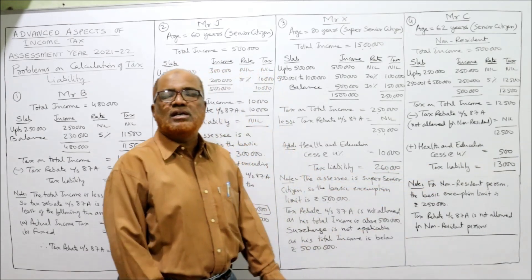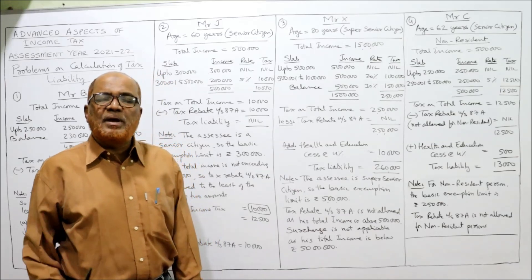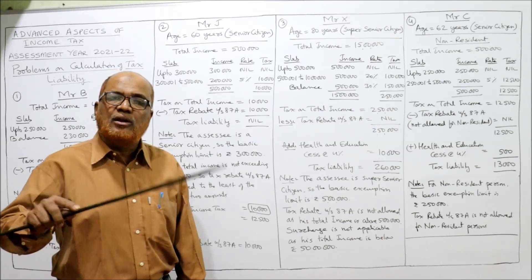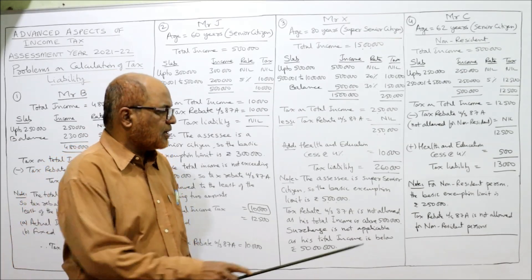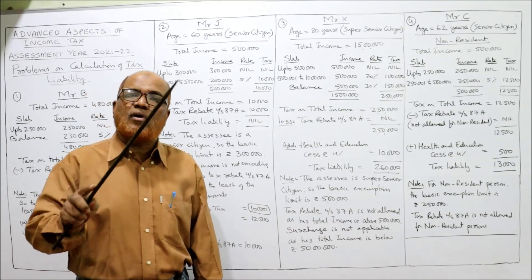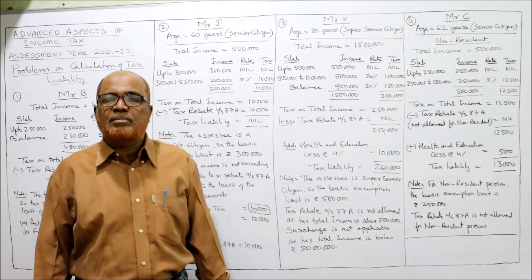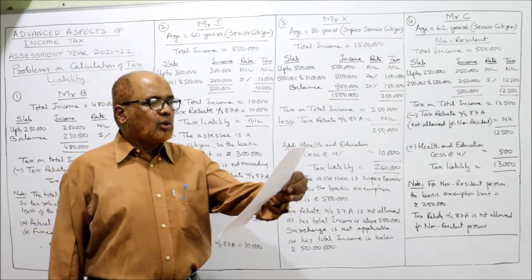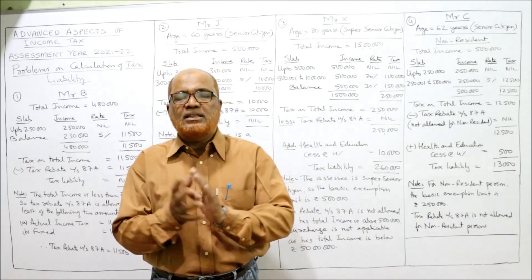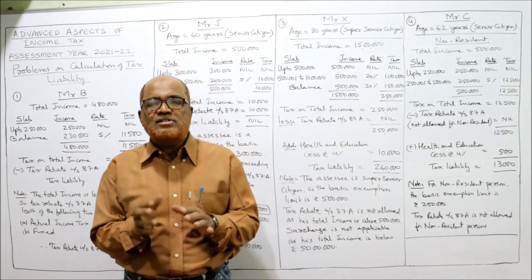Note: for non-resident persons, the basic exemption limit is ₹2,50,000 for any assessee — non-senior, senior, or super senior. Tax rebate under section 87A is allowed only for resident assessees; for non-resident assessees, tax rebate is not allowed. All four problems are now completed. The next problem will start in the next video.